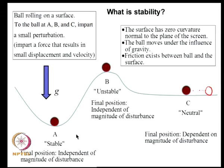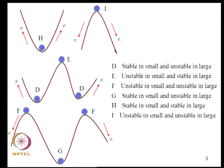We say that position A is stable, position B is unstable, and position C is neutral. We will have to refine these statements, so we will consider more situations.